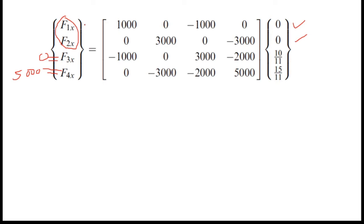I will write the equation for F1x. F1x is equal to: I will multiply 1000 with 0, it equals 0. And 0 multiplied with 0 is also 0. Then minus 1000 multiplied with 10 over 11, so I can get it as minus 1000 times 10 over 11.